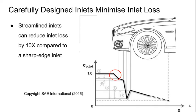We can carefully design inlets to these systems to minimize their loss. And if you streamline the inlet you can reduce the inlet loss by up to 10 times compared to a sharp edge inlet. So you can make this be a pretty small factor.